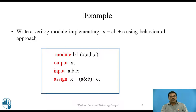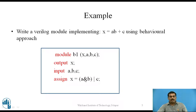The next step is to write the logic expression in terms of Verilog programming constructs — in this case the AND operator and the OR operator. The expression on the right-hand side is evaluated first and assigned to output x. This is taken care of by the assign keyword. So a is ANDed with b, and its result is ORed with c. After evaluation it is assigned to x, and at the end we write the endmodule keyword.